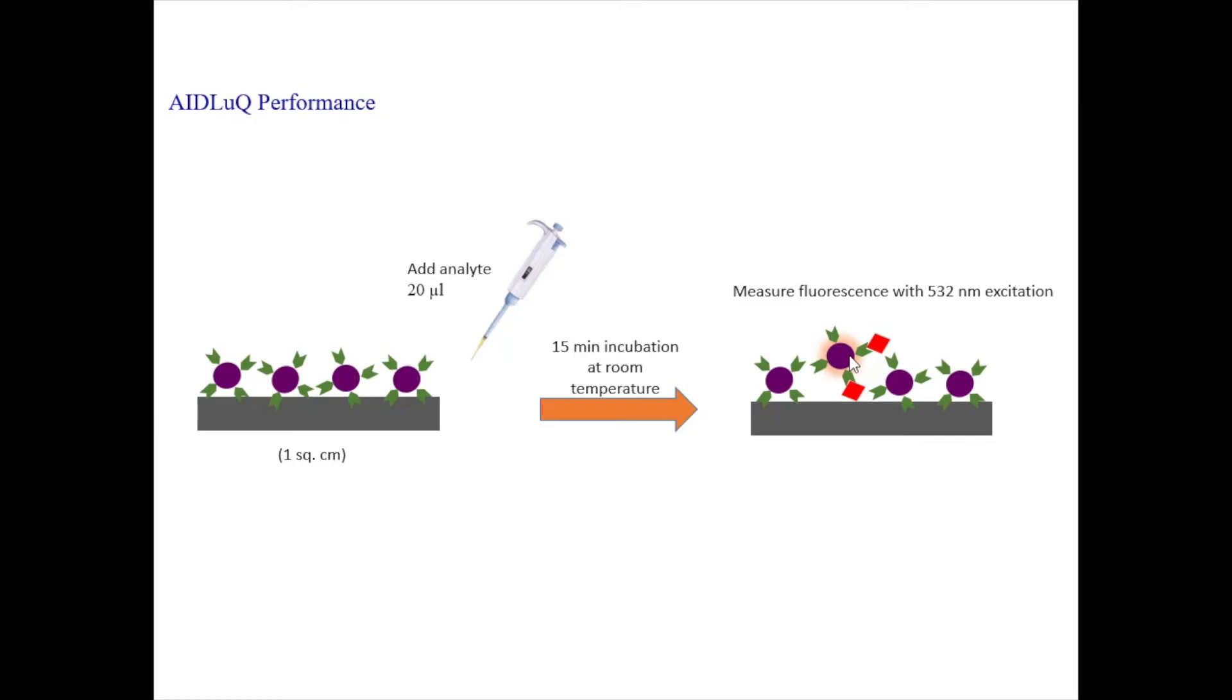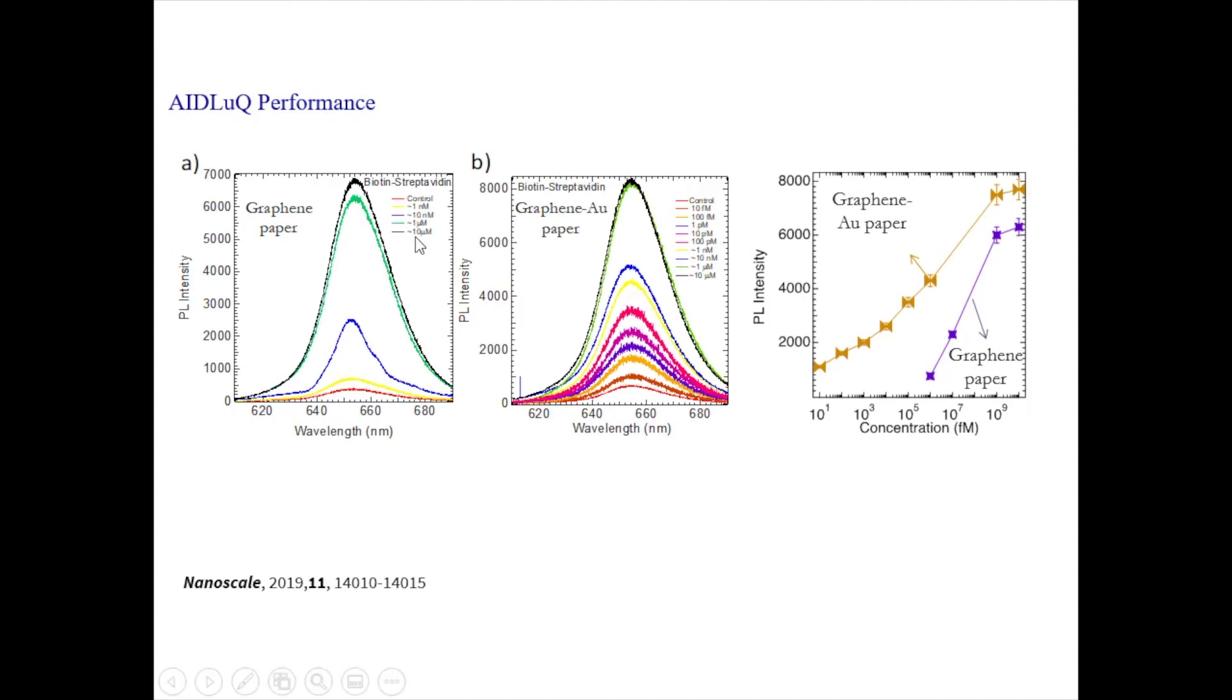So that's what you can see here. So we start with the control, no biotin at all. So that's very low fluorescence. But as you add higher and higher amounts from one nanomole to 10 micromole, you can see a concomitant increase in the fluorescence intensity. But we could also add gold or silver nanoparticles, in this case gold nanoparticles, to redistribute the electric field in such a way that we get much better sensitivity. And by adding gold nanoparticles, we were able to go down to a sensitivity of 10 femtomoles compared to one nanomole without the gold nanoparticles.